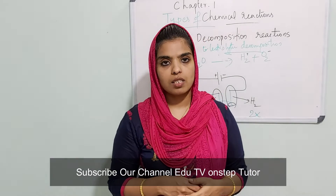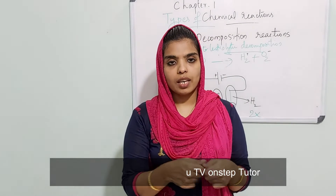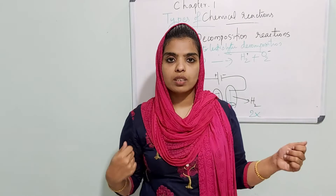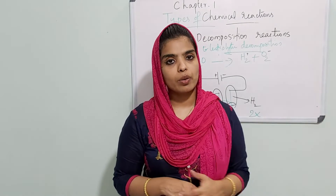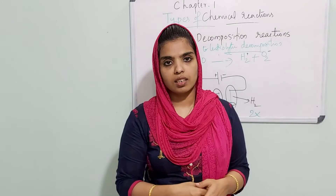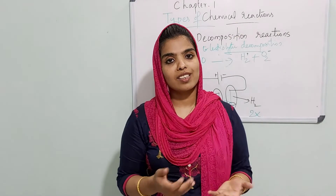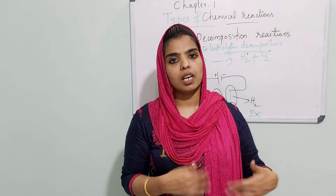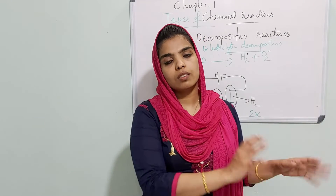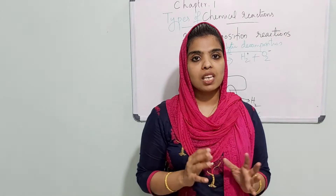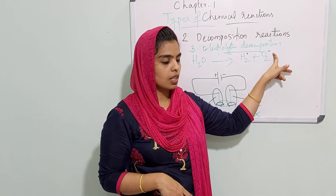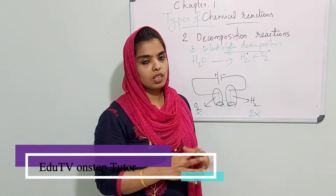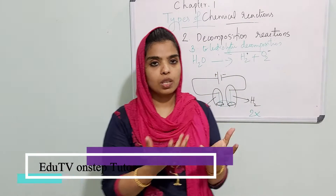When electricity is passed through water, we get hydrogen and oxygen. Oxygen is a highly electronegative non-metal, so it tends to gain electrons. Hydrogen, having a tendency to lose electrons, will give up its electron and become H+ ion. So water has a partial positive charge on hydrogen and partial negative charge on oxygen.